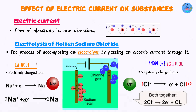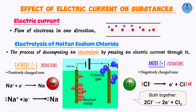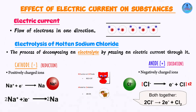The number of electrons being lost at the anode is going to be equivalent to the number of electrons being gained at the cathode. We are going to have two reactions occurring simultaneously: reduction and oxidation. Oxidation always takes place at the anode. Reduction — that is gaining of electrons — always takes place at the cathode. So this is a redox reaction.